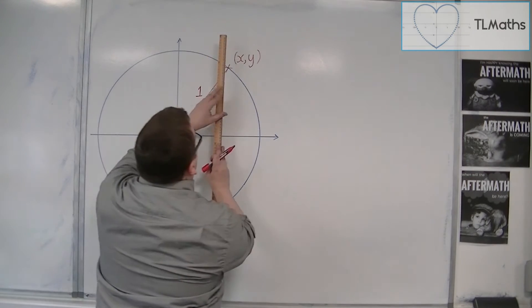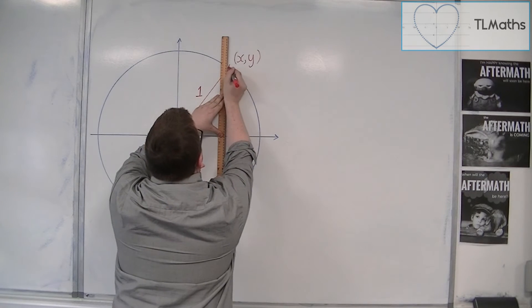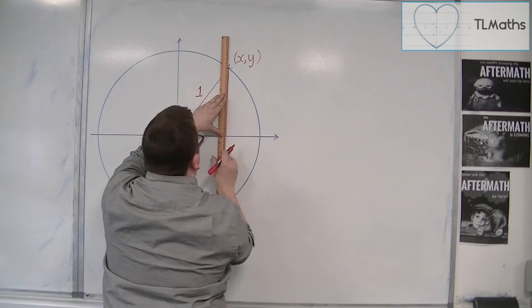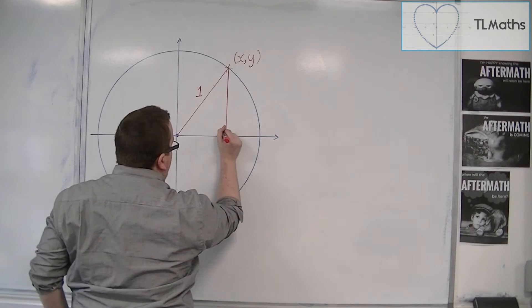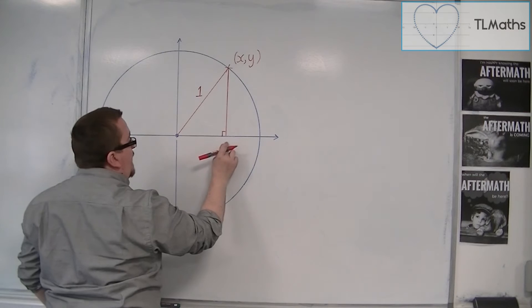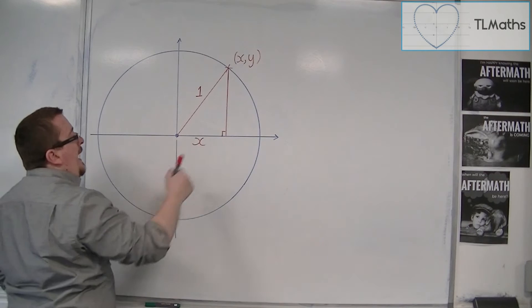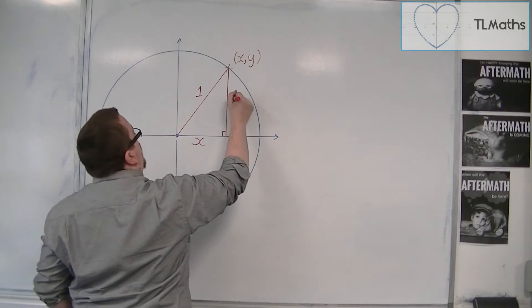Now if I drop a perpendicular from that point and I form a right-angled triangle, what I can then say is that I have a right-angled triangle. If that's the coordinate x, then it has a base of x and it has a height of y.